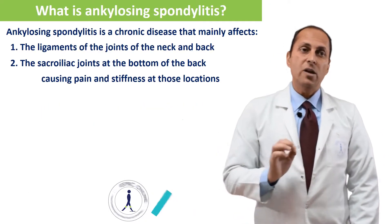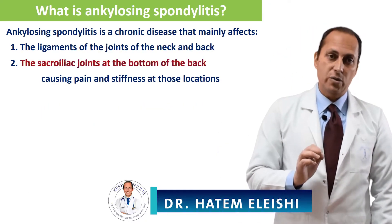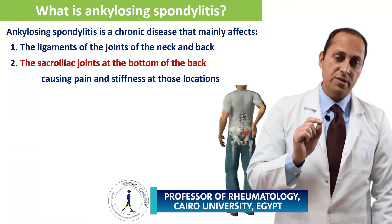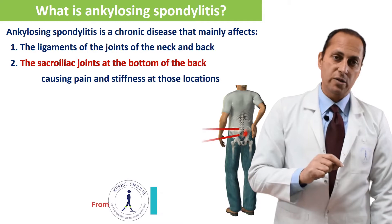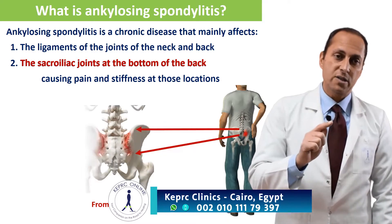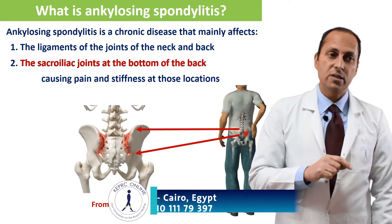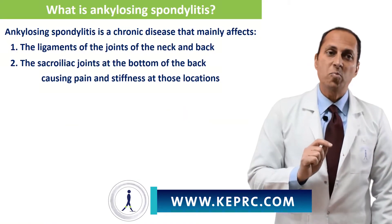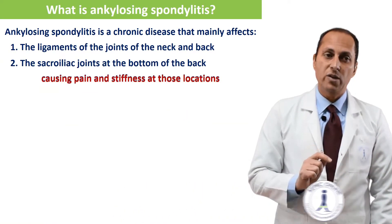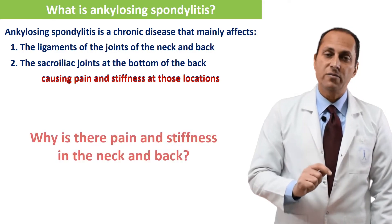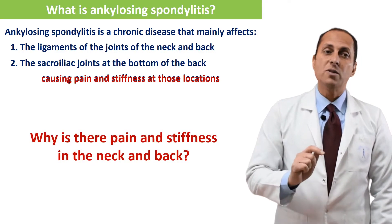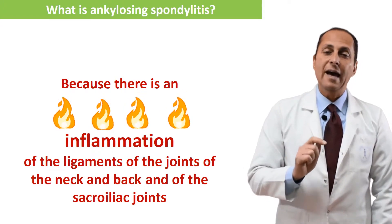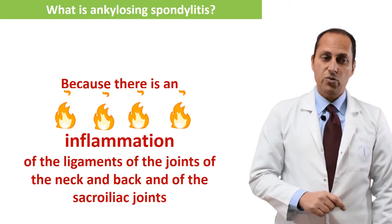Point number four: the sacroiliac joint. What is the sacroiliac joint? You can see this red spot — this is the sacroiliac joint. From the back, this is the sacroiliac joint, and this is it from the front. Point number five: causing pain and stiffness at those locations. Why is there pain and stiffness in the neck and back? Because there is an inflammation of the ligaments of the joints of the neck and back and of the sacroiliac joints.